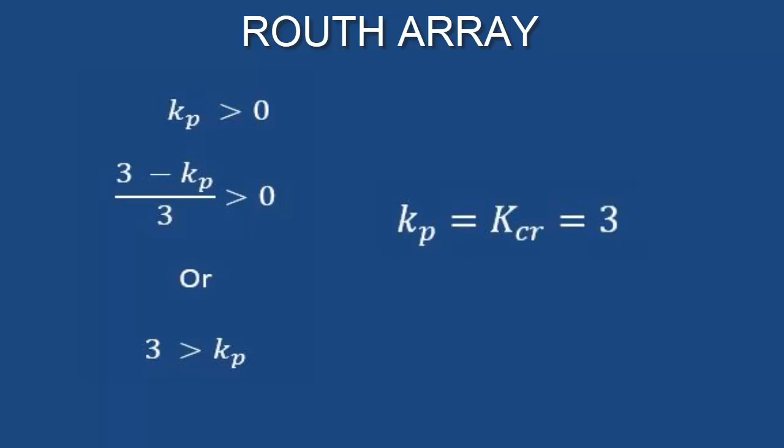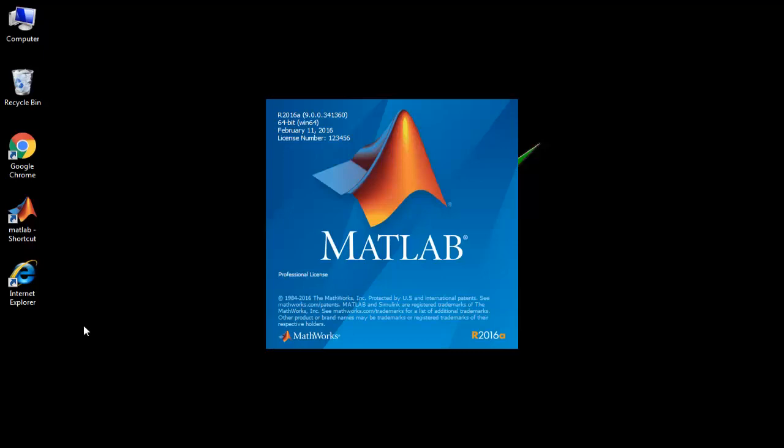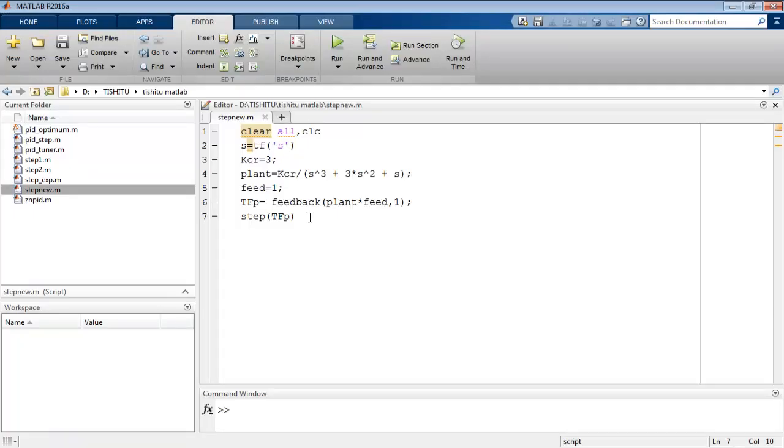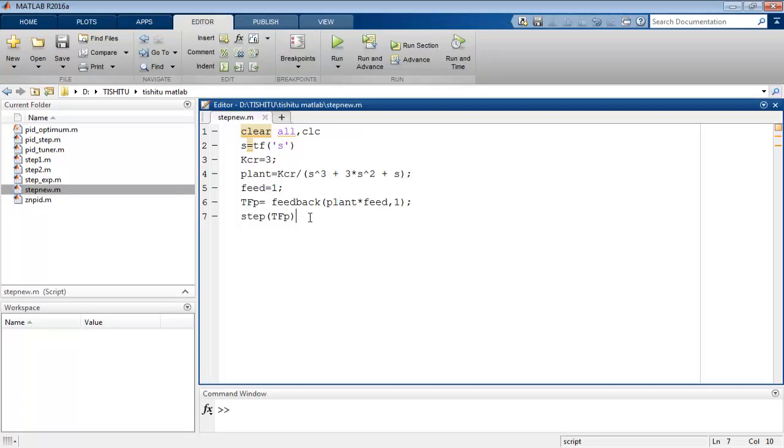This value of Kp defines the critical gain of the system at which the system response has sustained oscillation. Let's see the response of the system in MATLAB. Represent the gain by KCR equal to three. Once you open MATLAB, open a script file and write the code like this.